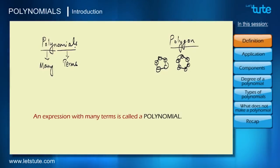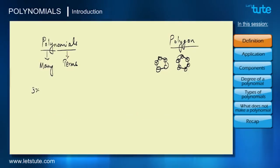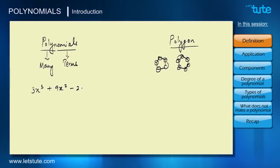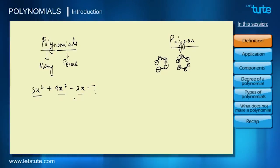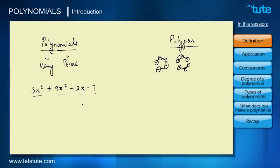So an expression with many terms is called a polynomial. Let's take an example: 3x³ + 9x² − 2x − 7. The exact definition of a polynomial is an expression which has more than three terms. We can see there are four terms in this example, and that is why it is called a polynomial.